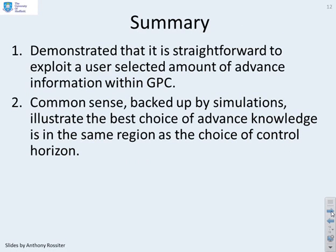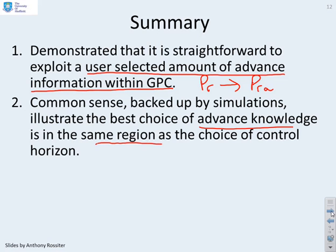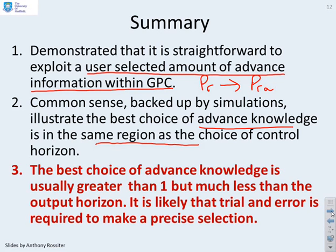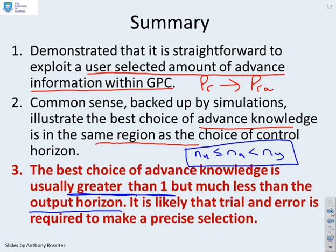So what's the summary? We've demonstrated that it's straightforward to exploit a user-selected amount of advance information within GPC. Essentially what you do is instead of PR, you use PRA, and the mapping between the two is trivial. Common sense, backed up by simulations, illustrate that the best choice of advance knowledge is roughly the same value as the choice of control horizon. The best choice of advance knowledge is usually greater than 1 but less than the output horizon. You've got something along the lines of nu less than or equal to na less than ny. Where's the best value for na? It's not immediately clear, but using common sense we can see that it's somewhere in that region. You're going to need trial and error to make a more precise selection and we'll look at that in the next video.